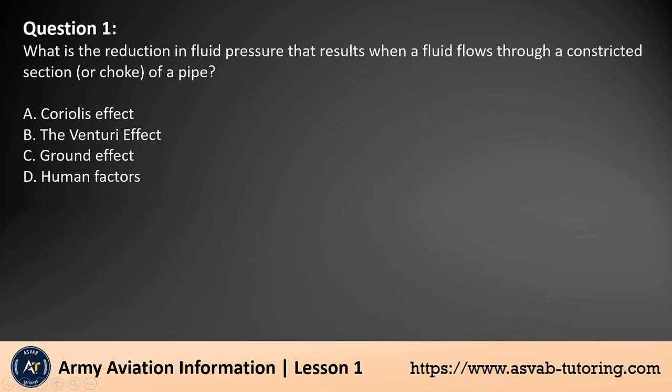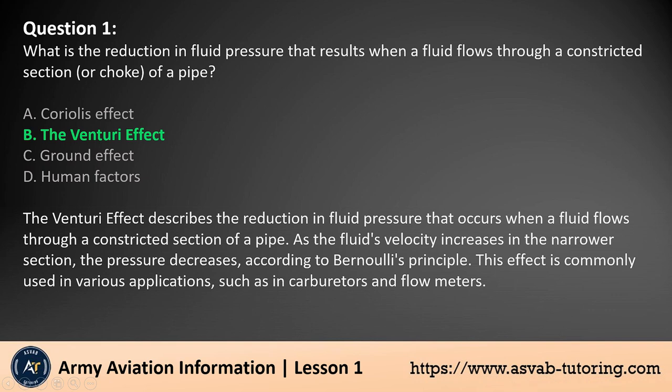Question 1. What is the reduction in fluid pressure that results when a fluid flows through a constricted section, or choke, of a pipe? A. Coriolis Effect. B. The Venturi Effect. C. Ground Effect. D. Human Factors. The answer is B.